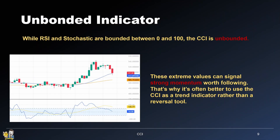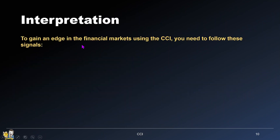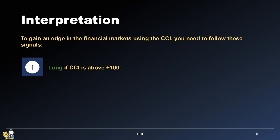These extreme values can signal strong momentum worth following. That's why it's often better to use the CCI as a trend indicator rather than a reversal tool. When the CCI is above plus 100, it often confirms strong bullish momentum. So, go long when the CCI is above plus 100, and go short when it drops below minus 100.